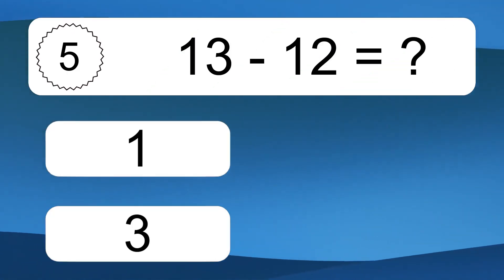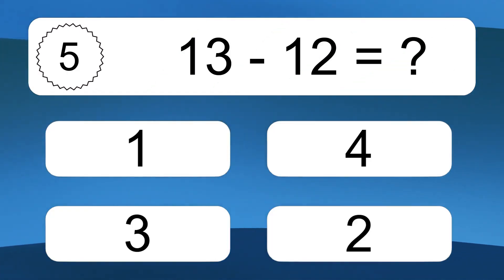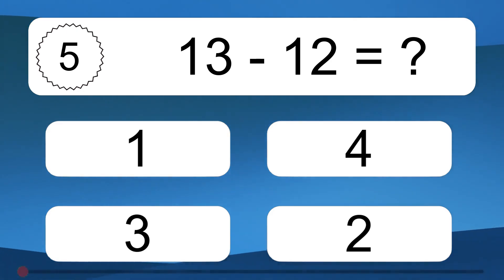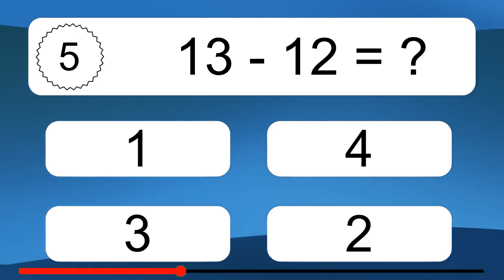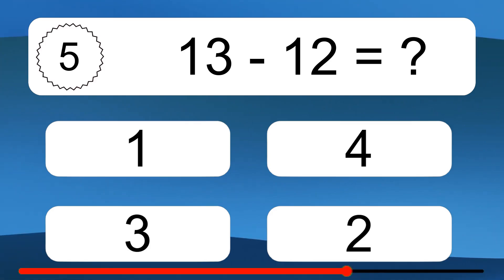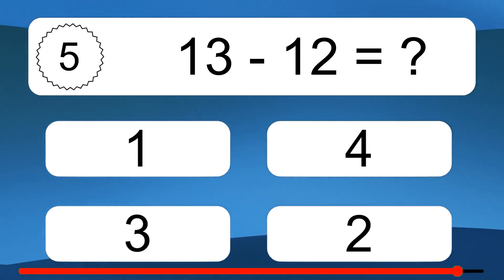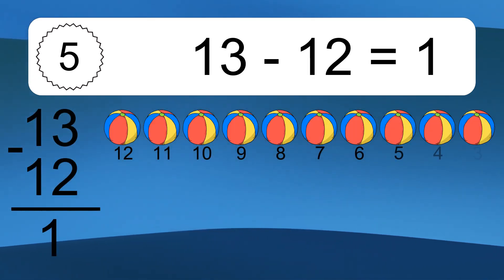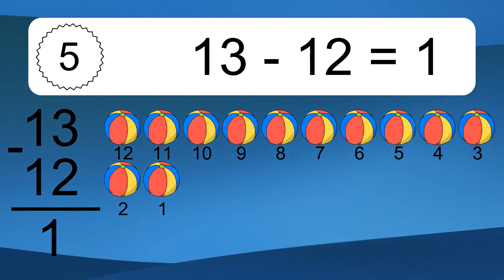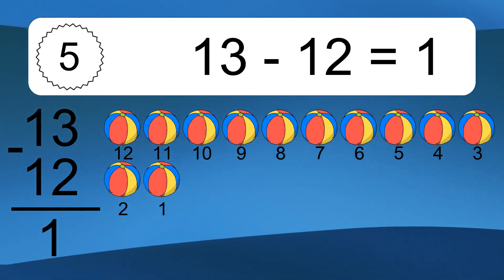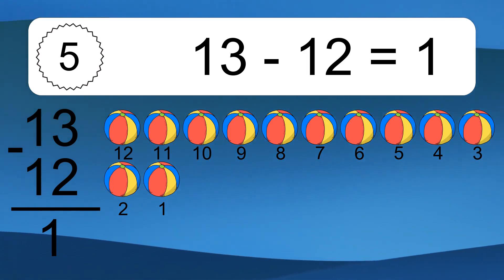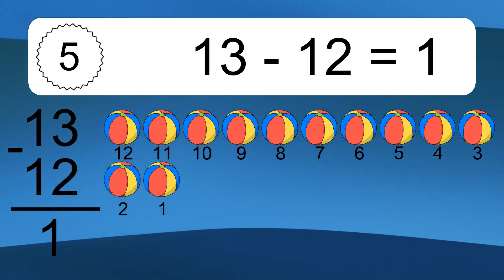13 minus 12 equals what? 13 minus 12 equals 1. Let's count it: 12, 11, 10, 9, 8, 7, 6, 5, 4, 3, 2, 1.